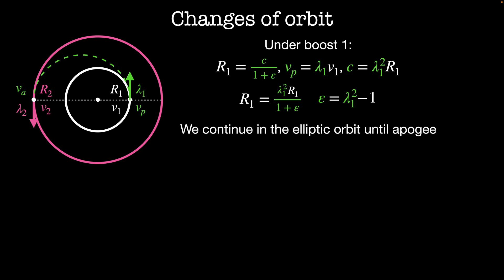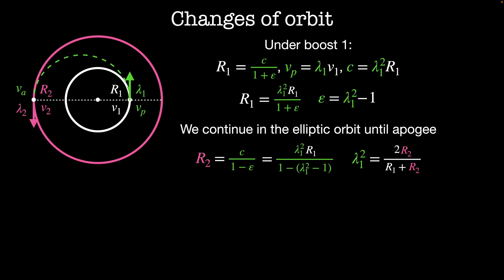Next, we continue in the elliptic orbit until apogee. The apogee corresponds to radius R2, so substituting our values for c and epsilon, we find R2 equals lambda1 squared times R1 divided by 1 minus the quantity lambda1 squared minus 1. We can now solve for lambda1 in terms of the two radii, and find that lambda1 squared equals 2R2 divided by R1 plus R2.